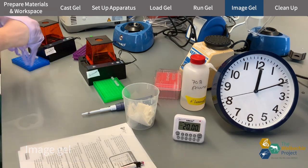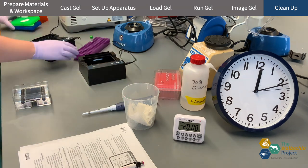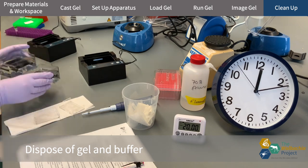I turn everything off and remove the buffer tank from the black carriage. I pick up the clear plastic tray with the gel on it and throw away the gel, but keep the plastic tray.